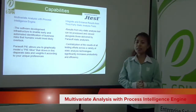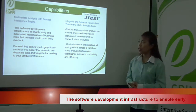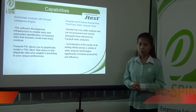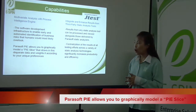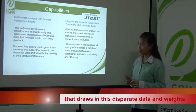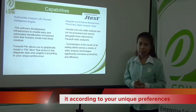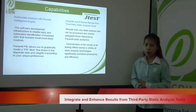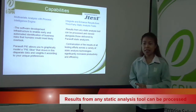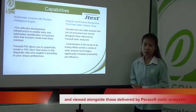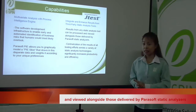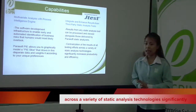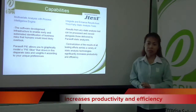Multivariate analysis with the Process Intelligence Engine provides software development infrastructure to enable early and automated identification of business risks that humans would most likely overlook. Parasoft PIE is used to graphically model a pie slice that draws in disparate data and reads according to your unique preferences. Integrated and enhanced results from third-party static analysis tools can be processed and viewed alongside those delivered by Parasoft static analyzers, significantly increasing productivity and efficiency.